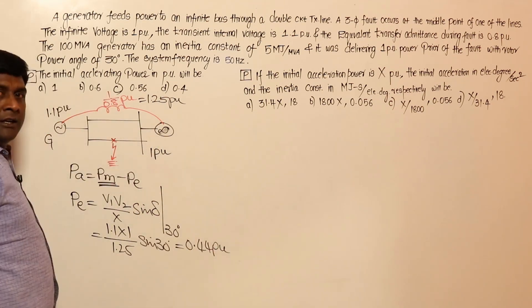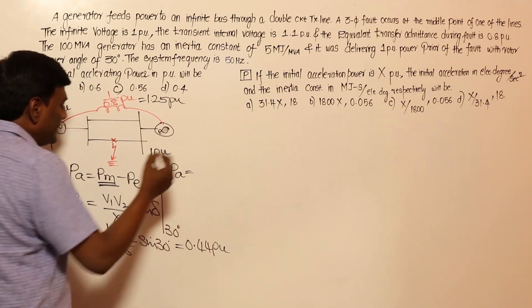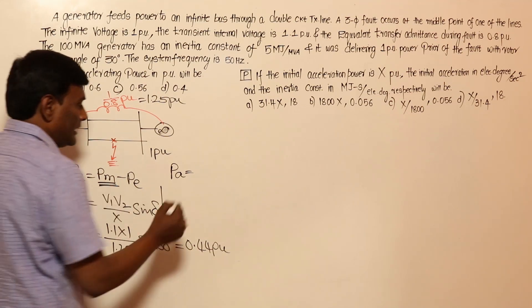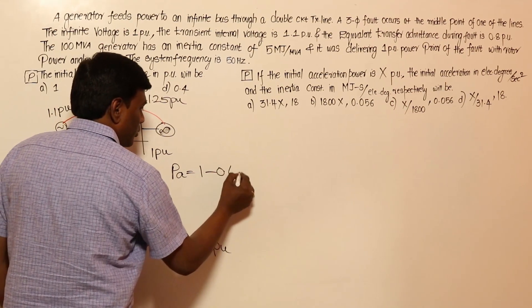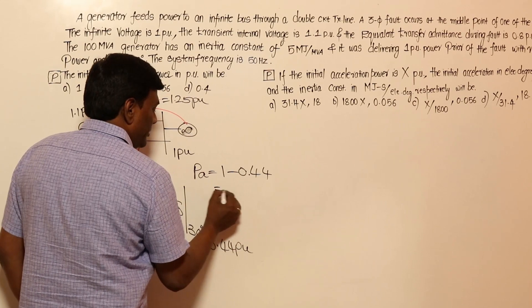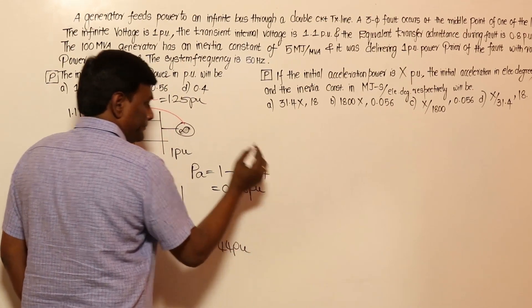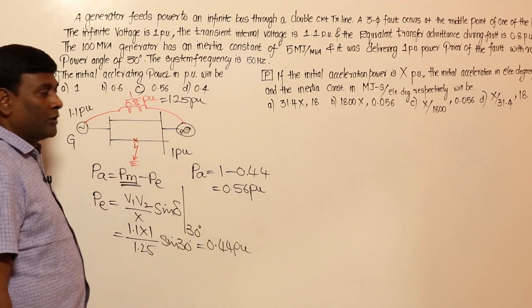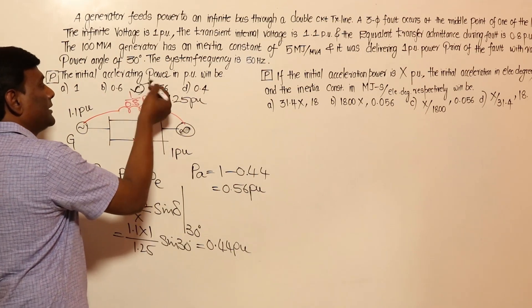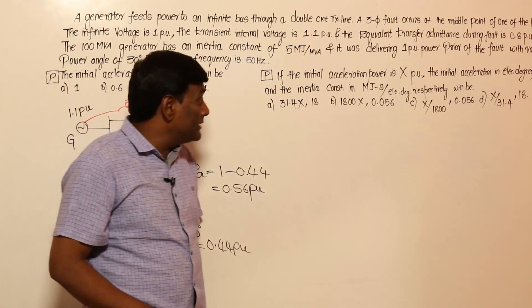Now let us calculate the accelerating power. Pa = Pm - Pe = 1 - 0.44 = 0.56 per unit. So the initial acceleration power is 0.56 per unit.